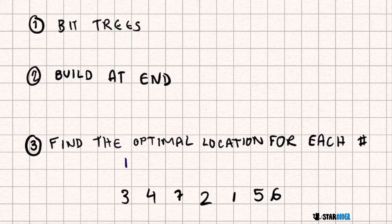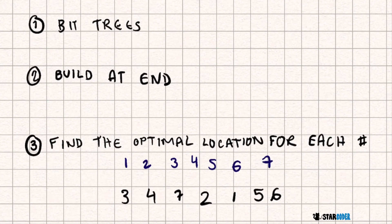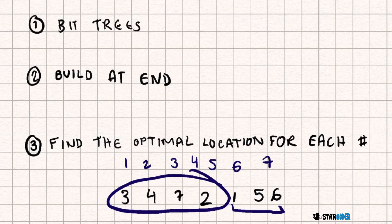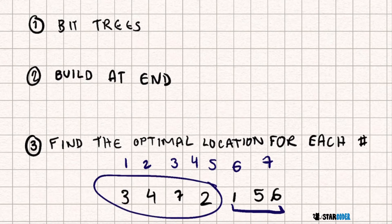So in order not to move the elements at the end, we're going to build our solution at the end. Since this is obviously going to end up as 1, 2, 3, 4, 5, 6, 7, we're going to start at the end and build the longest possible decreasing sequence from the end. So we go 6, 5, 1, and then we see 2 — since 2 is greater than 1, we know we're going to have to move 2. The longest increasing sequence at the end in this example is going to be 1, 5, and 6. The minimum number of moves is the number of elements at the beginning that aren't in that sequence.